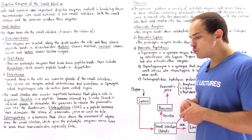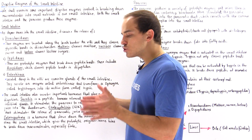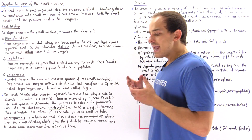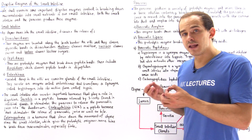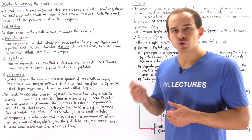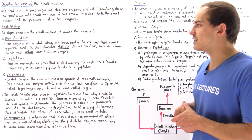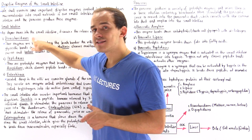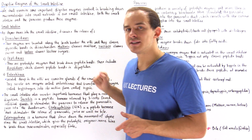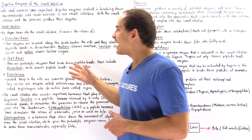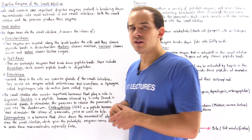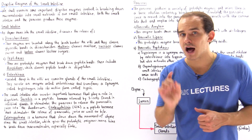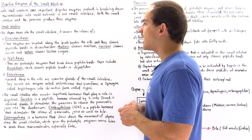As soon as our acidic chyme leaves the stomach and enters our small intestine, it stimulates the small intestine to secrete specialized proteolytic enzymes. Two categories are disaccharidases and peptidases, and both of these proteolytic enzymes are found at the brush border, at the villi of our small intestine.